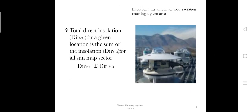By using this formula, the direct solar radiation is measured. The total direct insolation for a given location is the sum of insolation. Insolation is the amount of solar radiation reaching a given area.